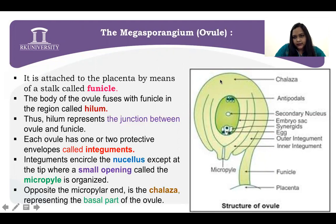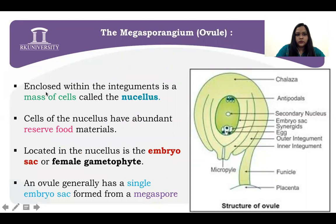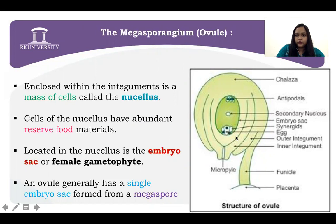Opposite to this micropyle, this region is called chalaza — that is the basal part of the ovule. Into the nucellus, there is a sac called the embryo sac, or the female gametophyte. The nucellus has an abundance of reserve food material that will in future convert to the endosperm and be utilized by the embryo. Ovules generally have a single embryo sac formed from a megaspore.